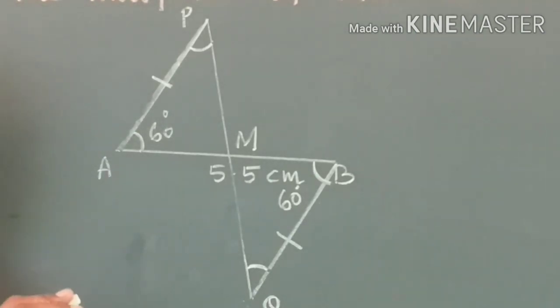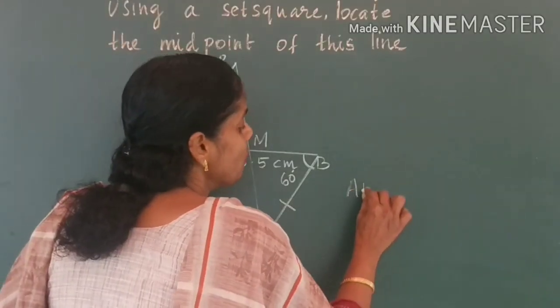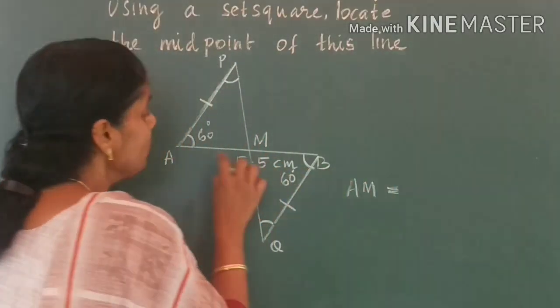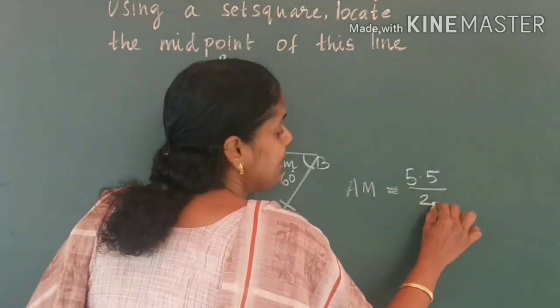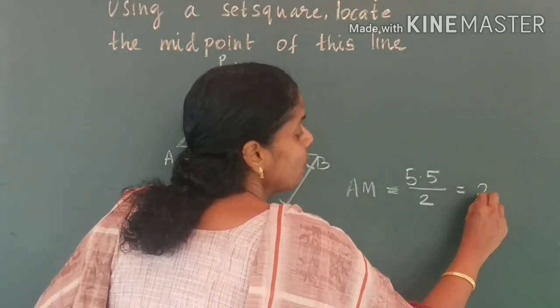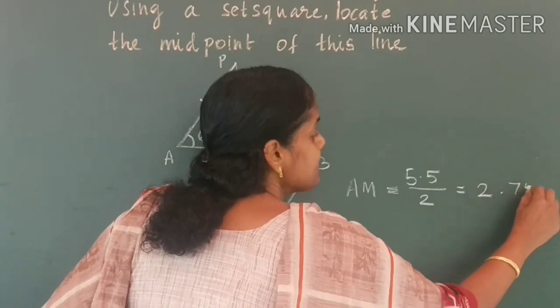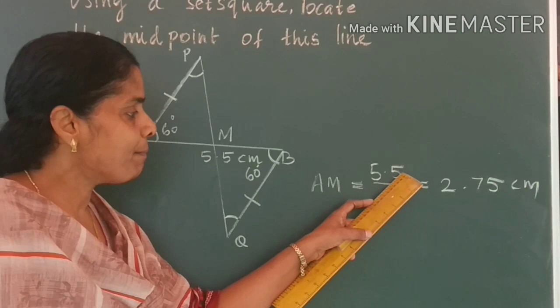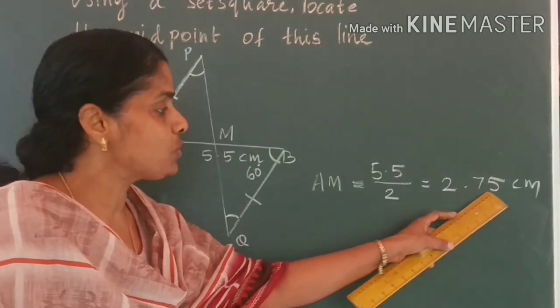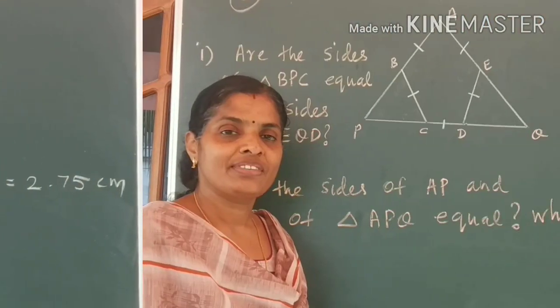Is it clear children? Can you say the length of AM now? AM would be equal to 5.5 divided by 2. That is equal to 2.75 centimetre. Half of 5.5 centimetre, which is 2.75 centimetre. Is it clear?